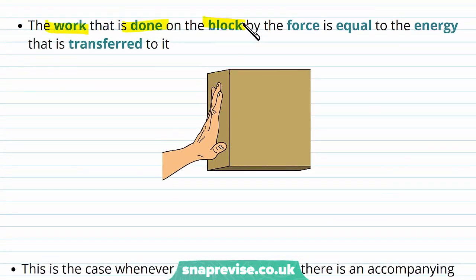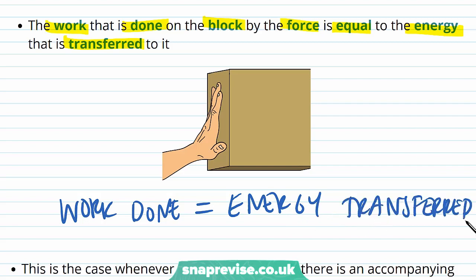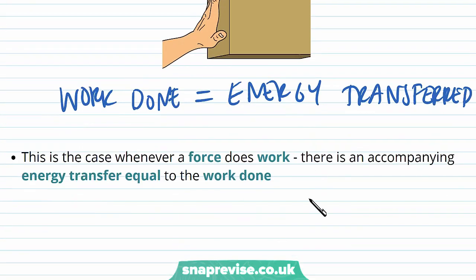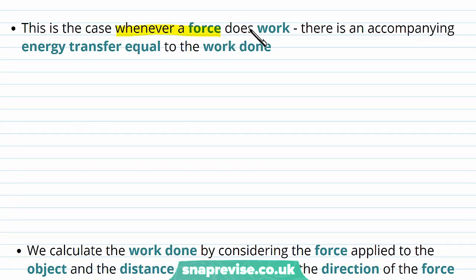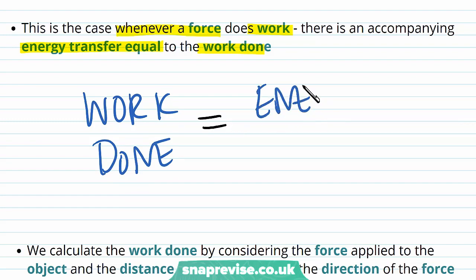The work done on the block by the force is equal to the energy that is transferred to it. So the work done on the block is equal to the energy transferred to it by pushing it. This is always the case — whenever we say we're doing work on something, the work done is equal to the energy transferred to the object.